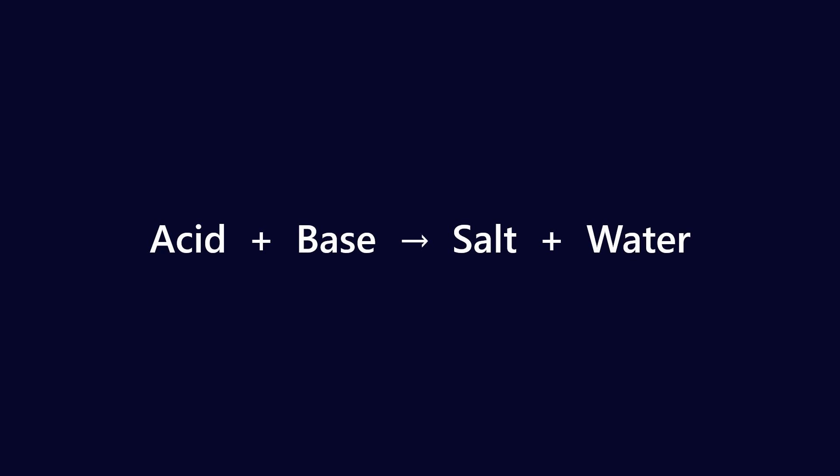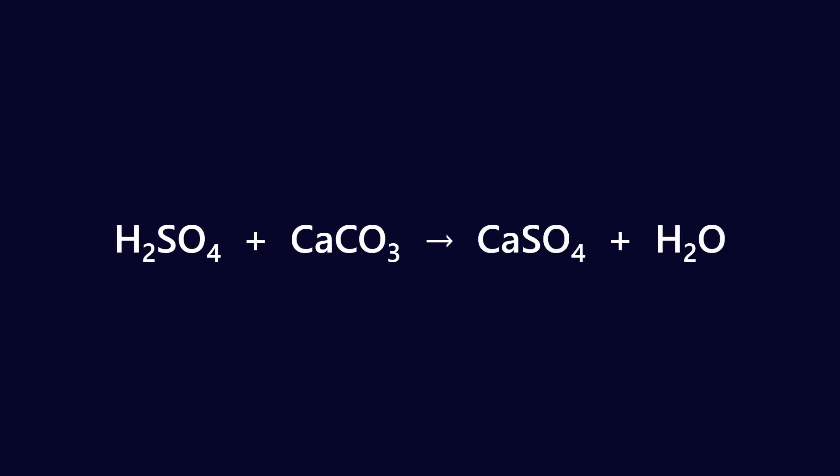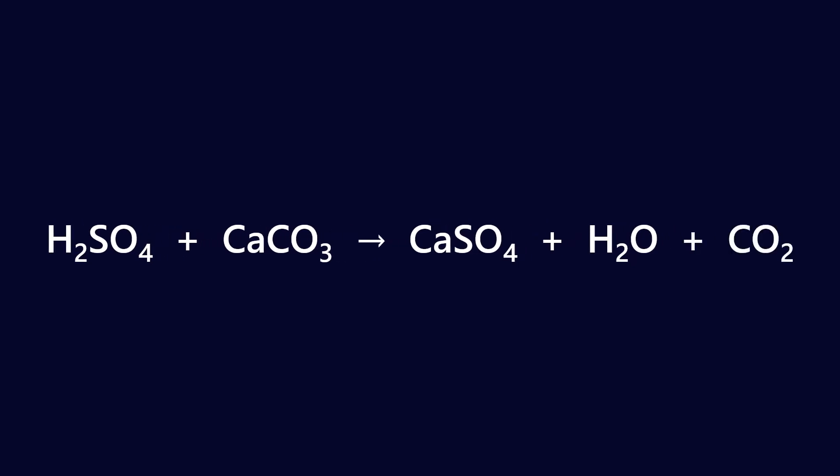So again, how does it do that neutralization? It's an acid-base reaction. So acid plus base makes salt plus water. Or in this instance, acid in oil plus TBN give salt and water. In the specific scenario I'm talking about, it's sulfuric acid plus calcium carbonate is going to make calcium sulfate plus water plus a little bit of carbon dioxide for good measure. So that's how the TBN molecule works.